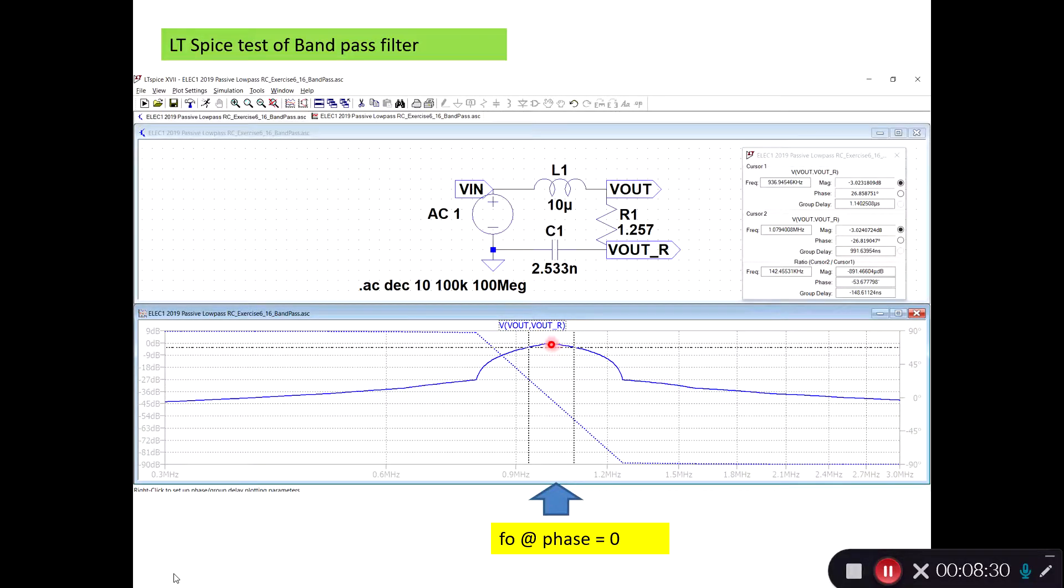At the center, at peak, we actually have the resonance frequency. And we can see that it is between 0.9 MHz and 1.2 MHz. And here we add the resonance frequency, we will have 0 degrees of phase shift. So that fits well here.